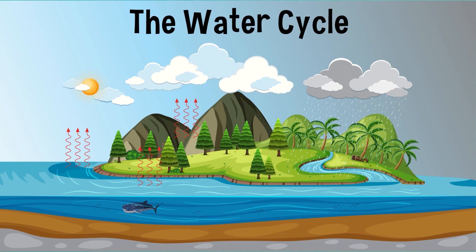At its most simplistic, the water cycle involves the sun heating surface water so that it becomes water vapor and evaporates into the sky. When the water vapor is in the sky, the cold temperatures of the atmosphere cause condensation, and the vapor becomes a liquid in the clouds.